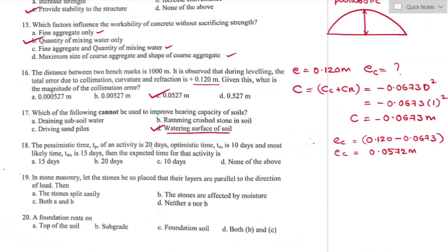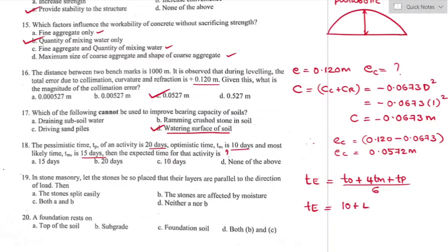Question number eighteen: the pessimistic time of an activity is 20 days, optimistic time is 10 days, and most likely time is 15 days. The expected time formula is: (optimistic + 4×most likely + pessimistic) / 6 = (10 + 60 + 20) / 6 = 15 days. Option A is the right answer.